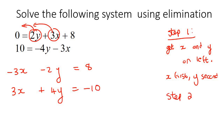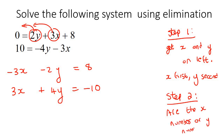Step two: what I want you to do is look for the following — are the x numbers or y numbers the same? We can see that the y numbers are different: one is 4 and one is minus 2. But look at the x numbers — they are almost identical. One is a minus 3 and one is a 3. So we are going to use the x's.